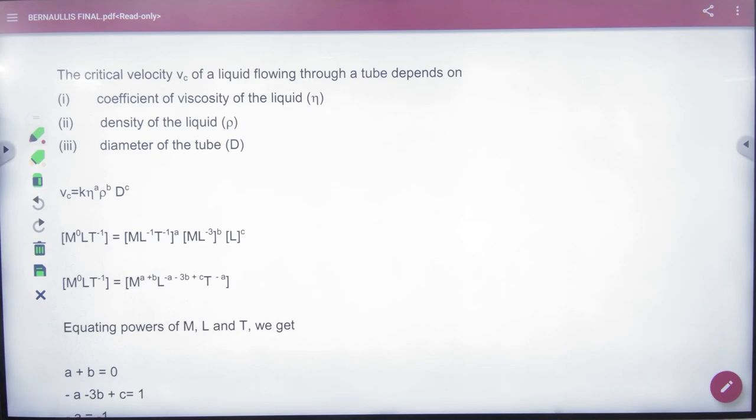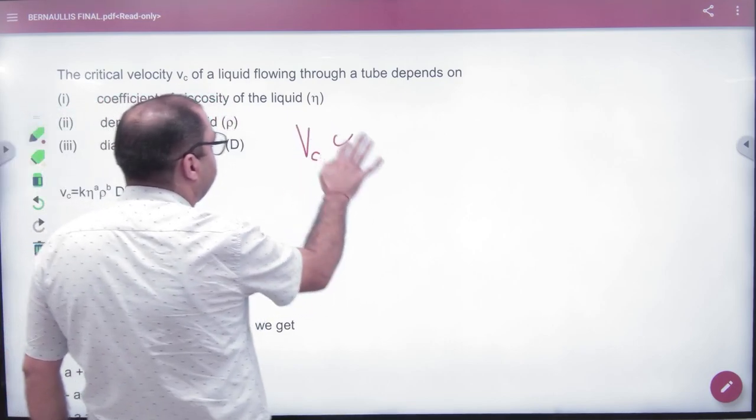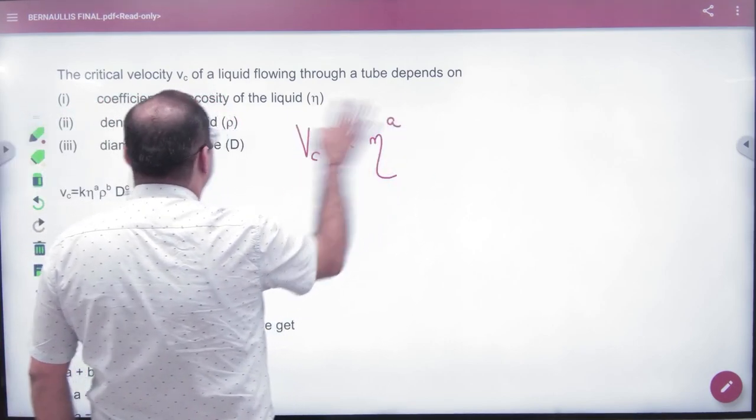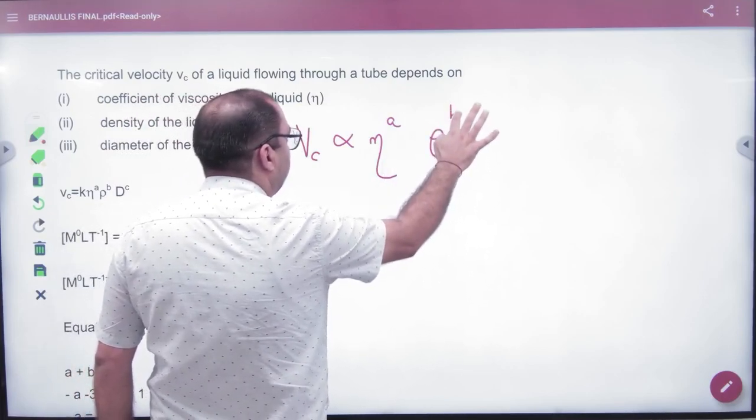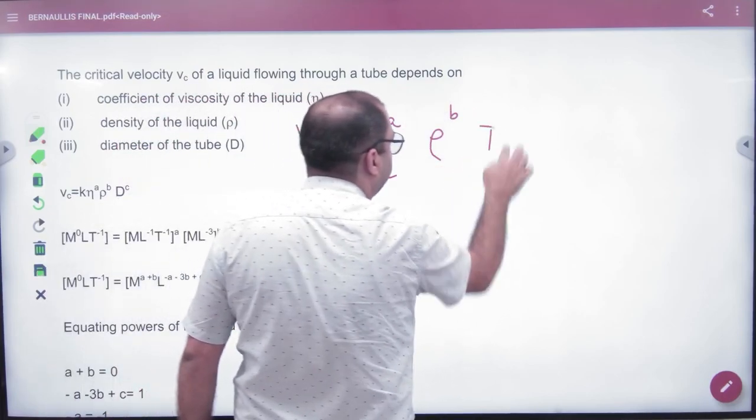Using units and dimensions, we already used the critical velocity term. So critical velocity depends on three factors: coefficient of viscosity, density of the liquid, and diameter of the tube. What do you remember?